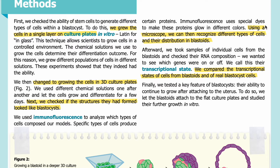Specific types of cells produce certain proteins. Immunofluorescence uses special dyes to make these proteins glow in different colors. Using a microscope, we can then recognize different types of cells and their distribution in blastoids. Afterward, we took samples of individual cells from the blastoids and checked their RNA composition — we wanted to see which genes were on or off, which we called their transcriptional state. We compared the transcriptional states of cells from blastoids and real blastocyst cells. Finally, we tested a key feature of blastocysts: their ability to continue to grow after attaching to the uterus, by letting the blastoids attach to flat culture plates and studying their further growth in vitro.